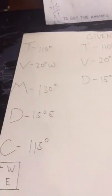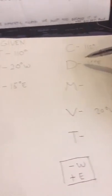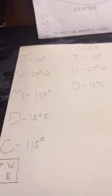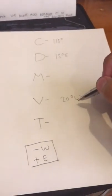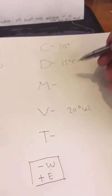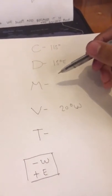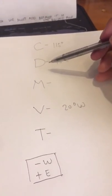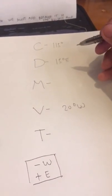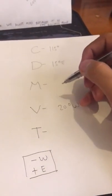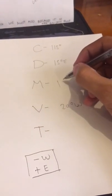Our compass north is 115 degrees, our deviation is 15 degrees east, and our variation is 20 degrees west. We need to find the magnetic north and the true course. To find the magnetic north, we add compass and deviation: 115 degrees plus 15 degrees east equals 130 degrees.